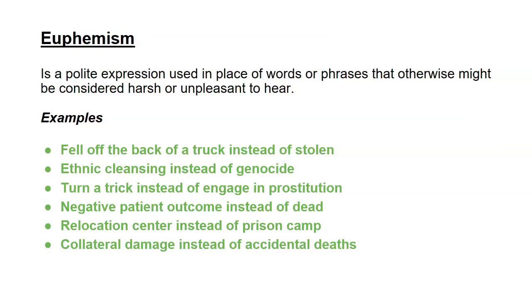Euphemism is a polite expression used in place of words or phrases that might be considered harsh or unpleasant. Examples: 'fell off the back of a truck' instead of stolen; 'ethnic cleansing' instead of genocide; 'turn a trick' meaning engage in prostitution; 'negative patient outcome' means the person is dead; 'recollection center' means a prison camp; 'collateral damage' means accidental deaths. Other examples: 'kicking the bucket' meaning he died. There are many forms of euphemism used in poetry or literature.